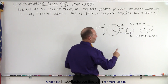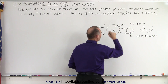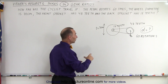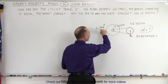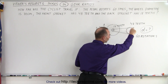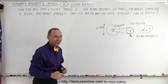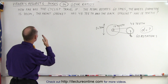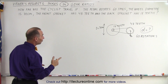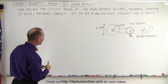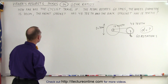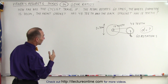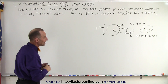They tell us that the front sprocket has 48 teeth and the back sprocket has 18 teeth. They also tell us that the diameter of the bicycle wheel is 70 centimeters and that the pedal will rotate 60 times. The question is: how far will the cyclist travel if the pedal rotates 60 times, the wheel diameter is 70 centimeters, the front sprocket has 48 teeth and the back sprocket has 18 teeth?